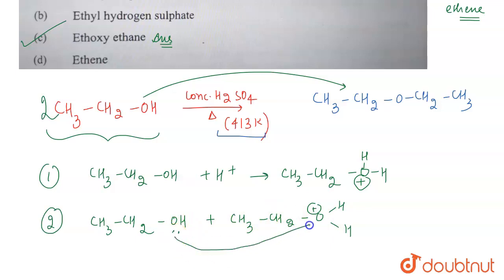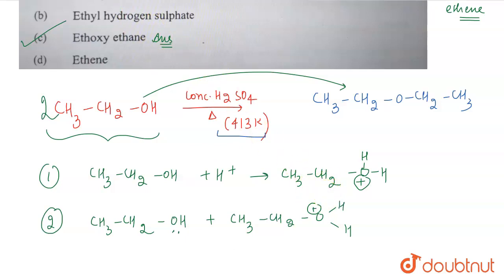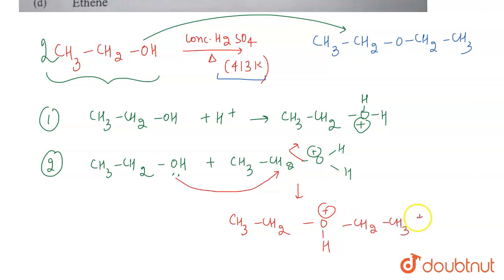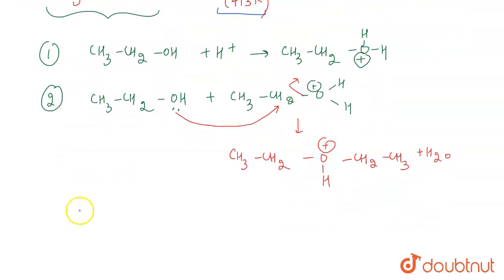The lone pair of the second ethanol oxygen attacks the protonated ethanol, the O–H bond shifts, and water is removed. What we are left with is CH₃CH₂–O⁺H–CH₂CH₃ along with the formation of water.